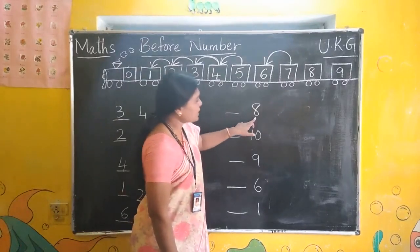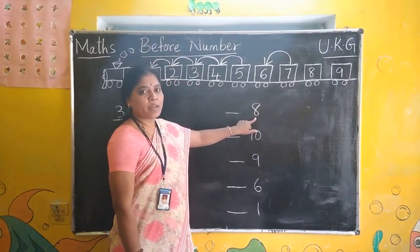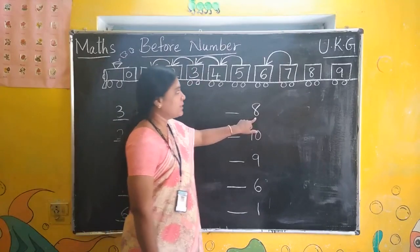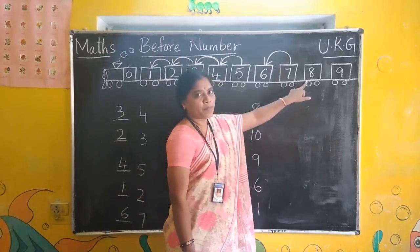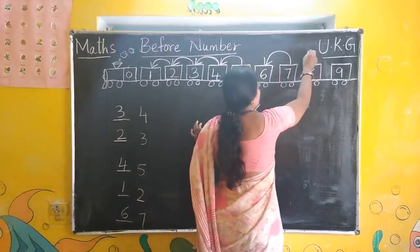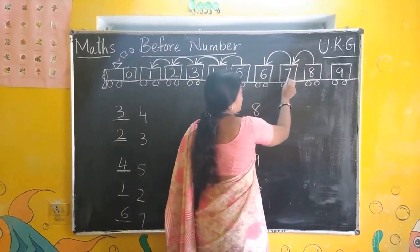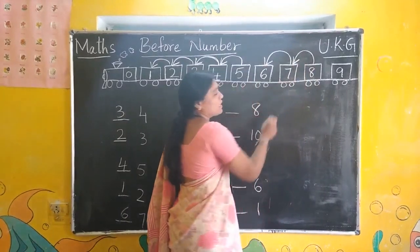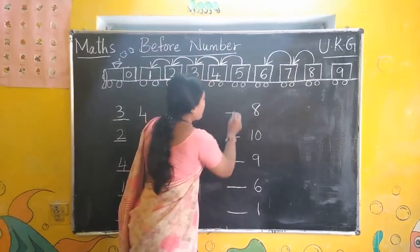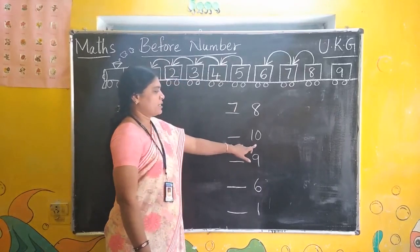Look at this number. What is this number? Number 8. 8 is here. So, before 8, draw an arrow mark. What is this number? Number 7. Write down.